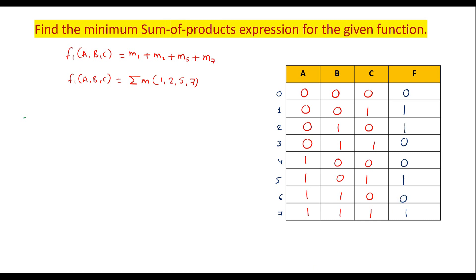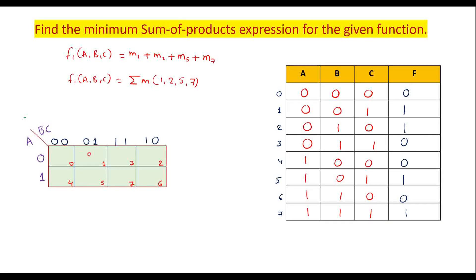Now with the help of the 3-variable KMAP, we will enter the output values. This is the 3-variable KMAP with A on the row axis and BC on the column axis. For minterms 1, 2, 5, and 7 we enter 1; for all remaining cells we enter 0.